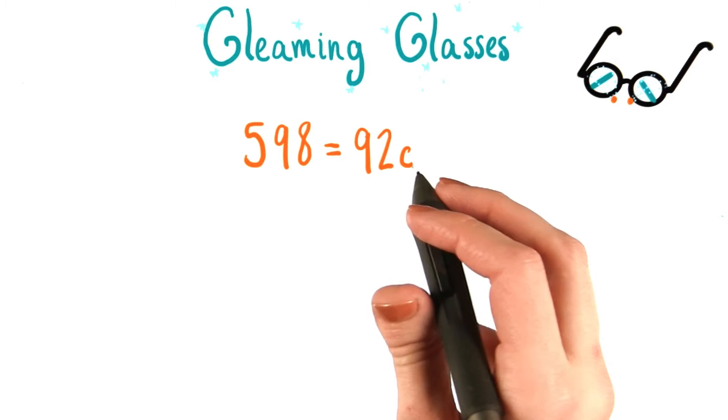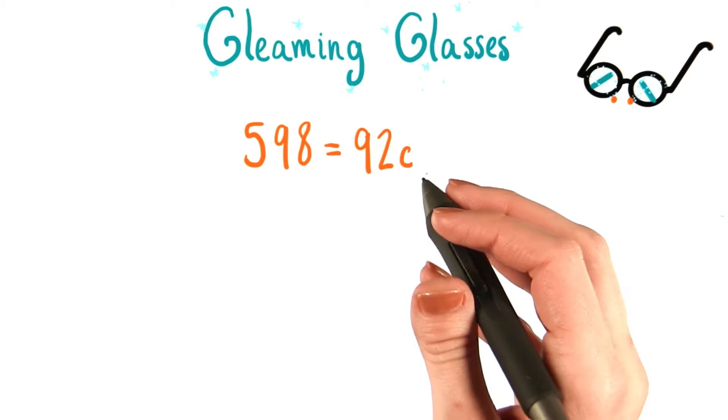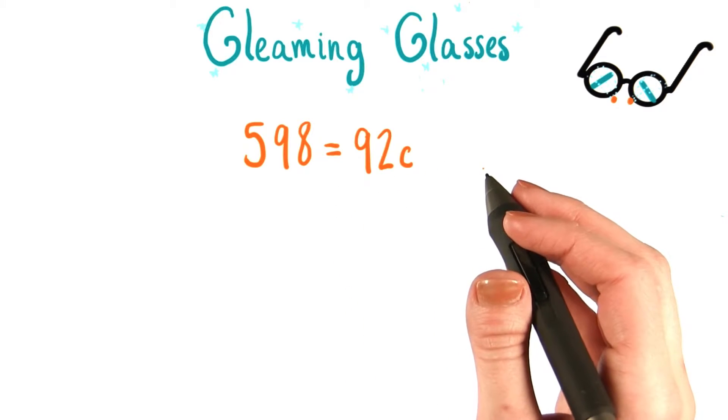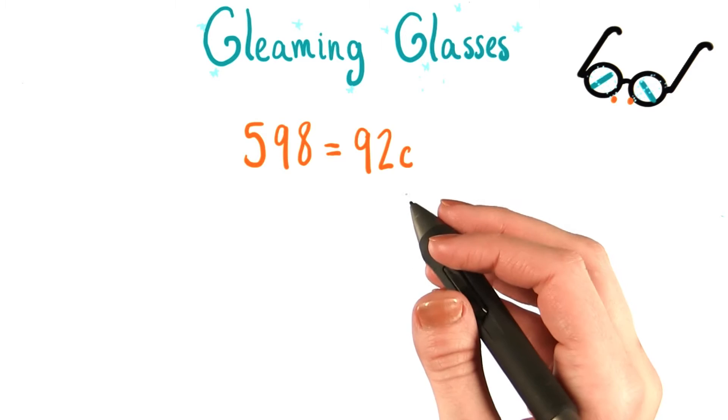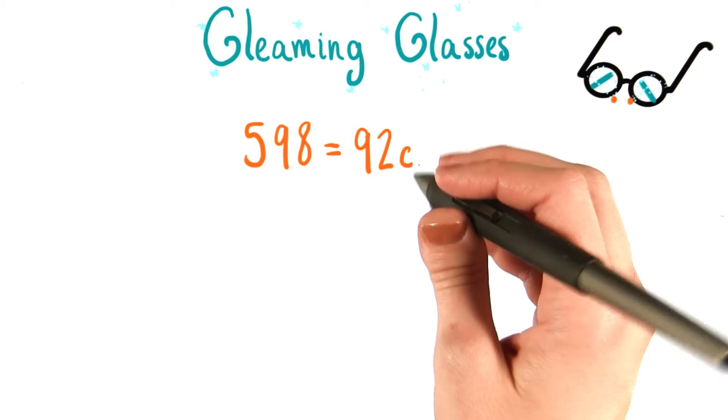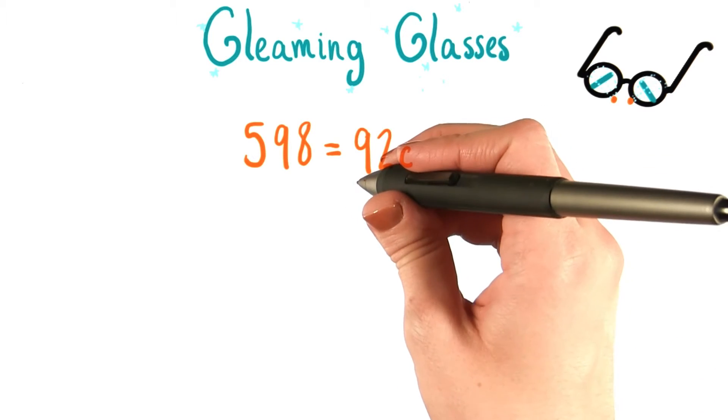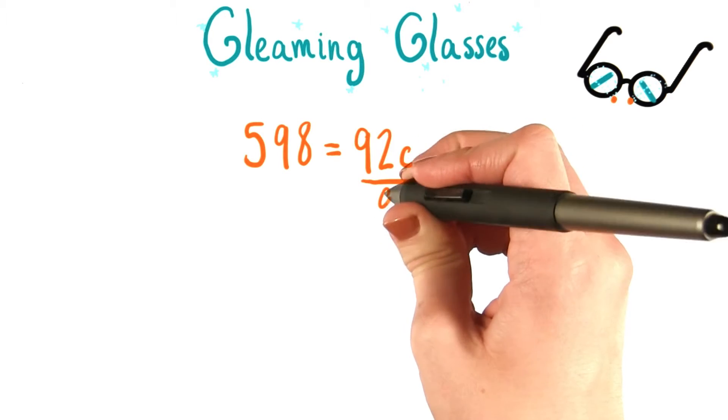We basically need to undo this multiplication, get rid of it. And the way to undo multiplication is to do some division. Since right now c is being multiplied by 92, to have just c on its own, we need to divide by 92.